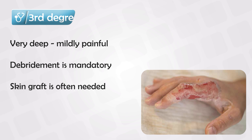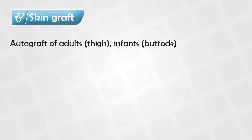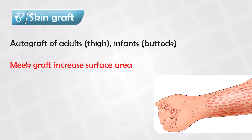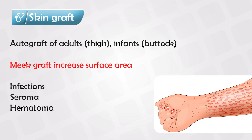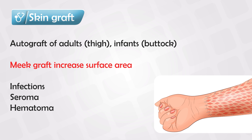For adults, we use the thigh area for skin grafting, and for infants and children we use the skin from the buttocks area. If the skin is insufficient, we can use Meeks grafting, which modifies the transplanted skin and increases the coverage area up to nine times. The most common causes of skin transplant failure are infections, seromas, and hematomas.